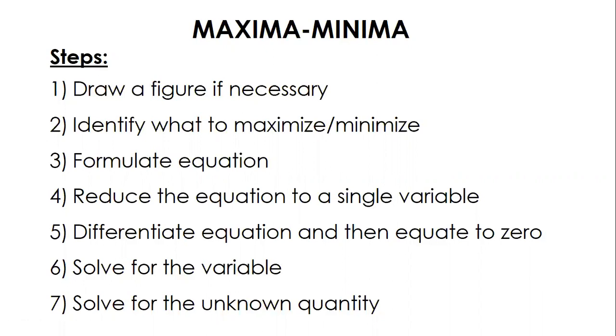First step is to draw a figure if necessary. Number two: identify what to maximize or minimize. Number three: formulate the equation of that quantity that you want to maximize. And number four: reduce the equation to a single variable because in formulating an equation sometimes it involves more than one variable, two or three variables, and you have to reduce the equation to a single variable before you differentiate.